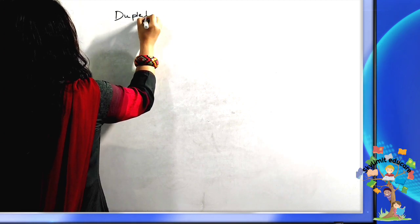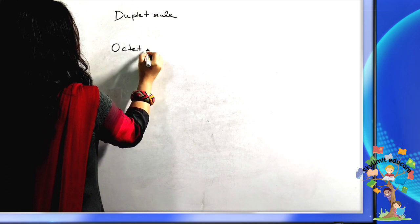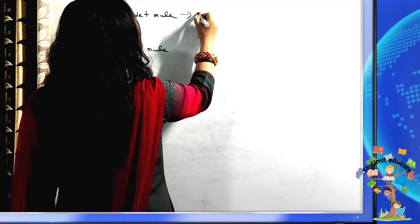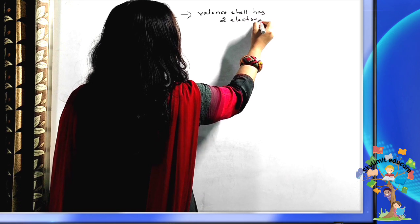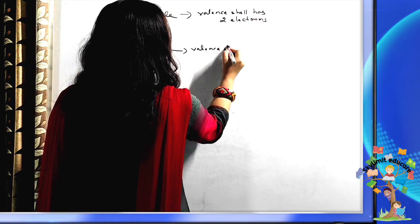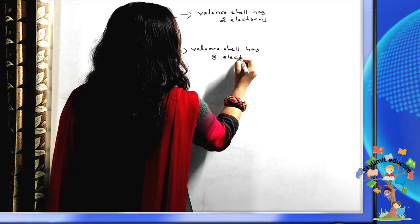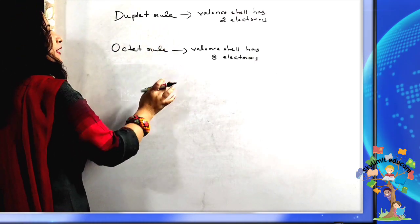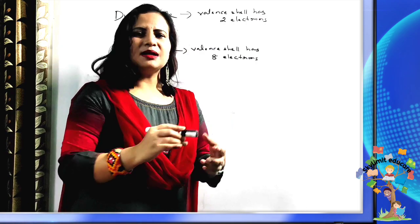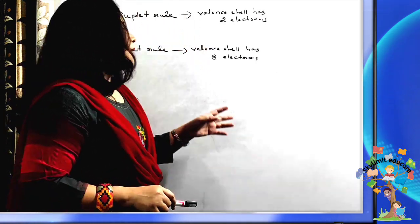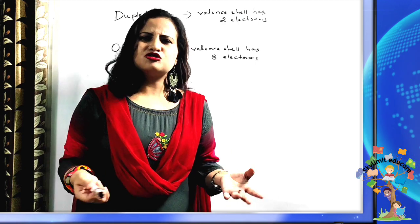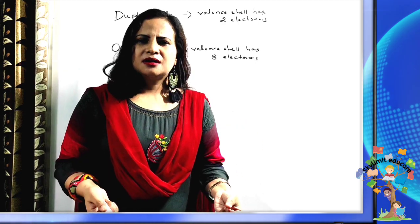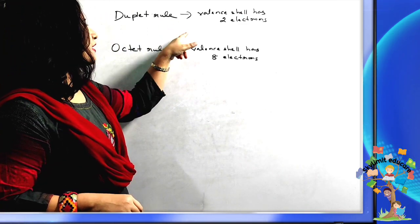Let us discuss the duplet rule and the octet rule. Simply put, in the duplet rule the valence shell has 2 electrons, and in the octet rule the valence shell has 8 electrons. An atom is neutral in nature, but for an atom to become stable it must attain either the duplet or the octet configuration.